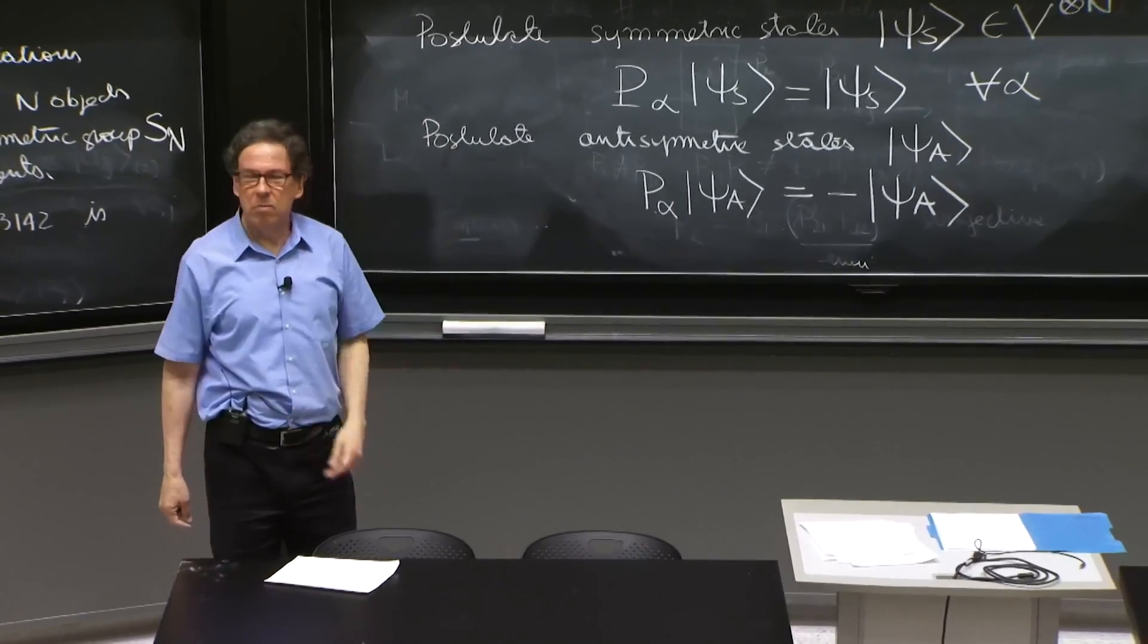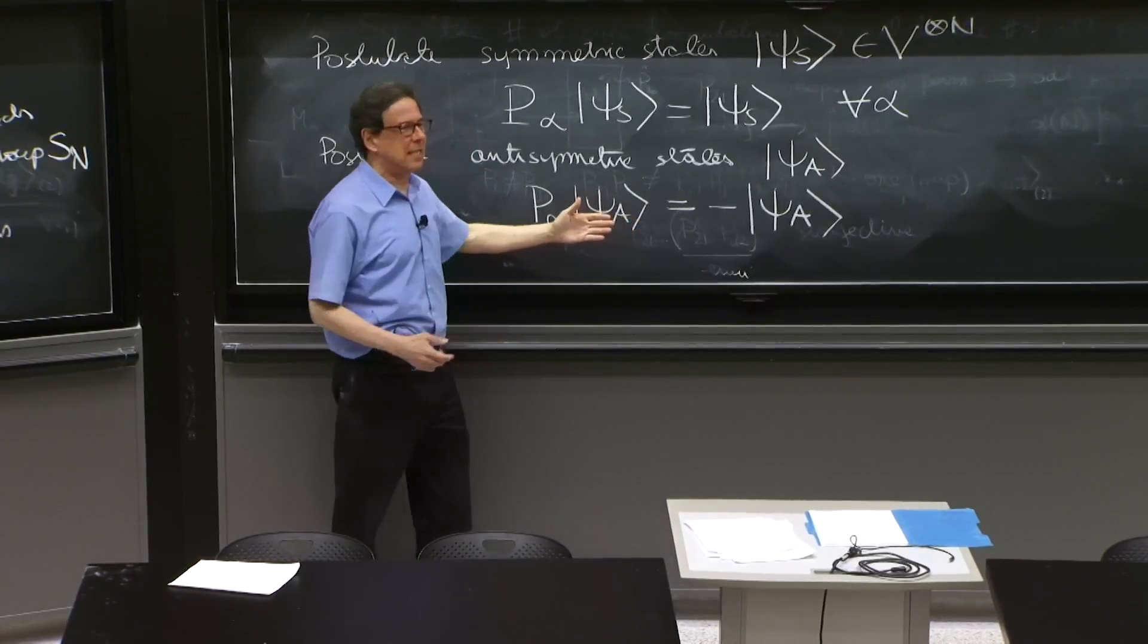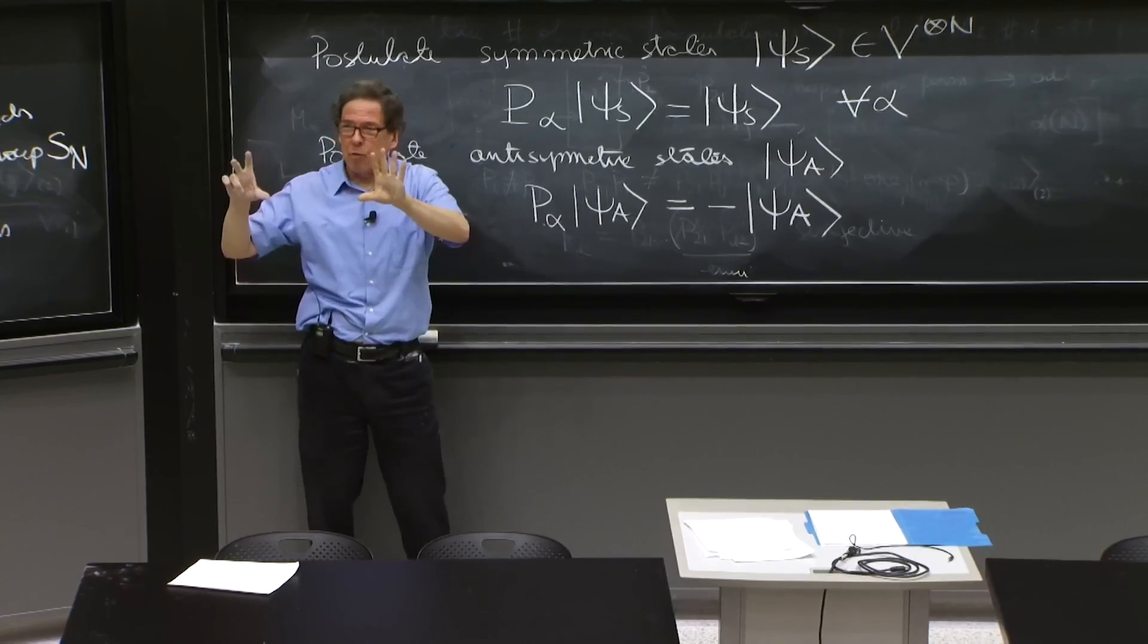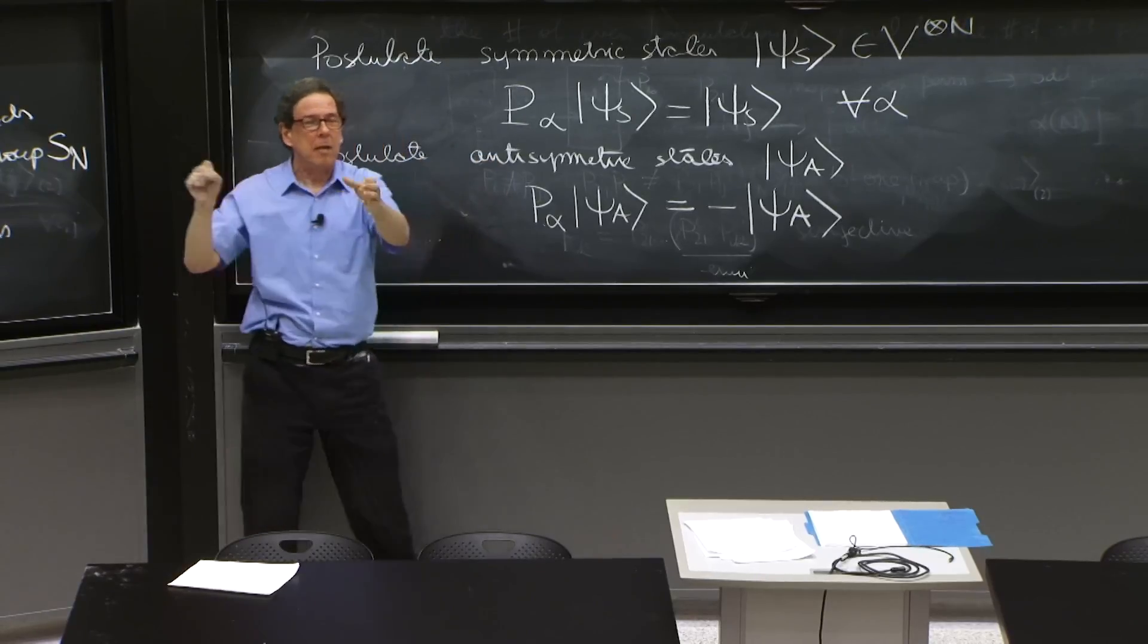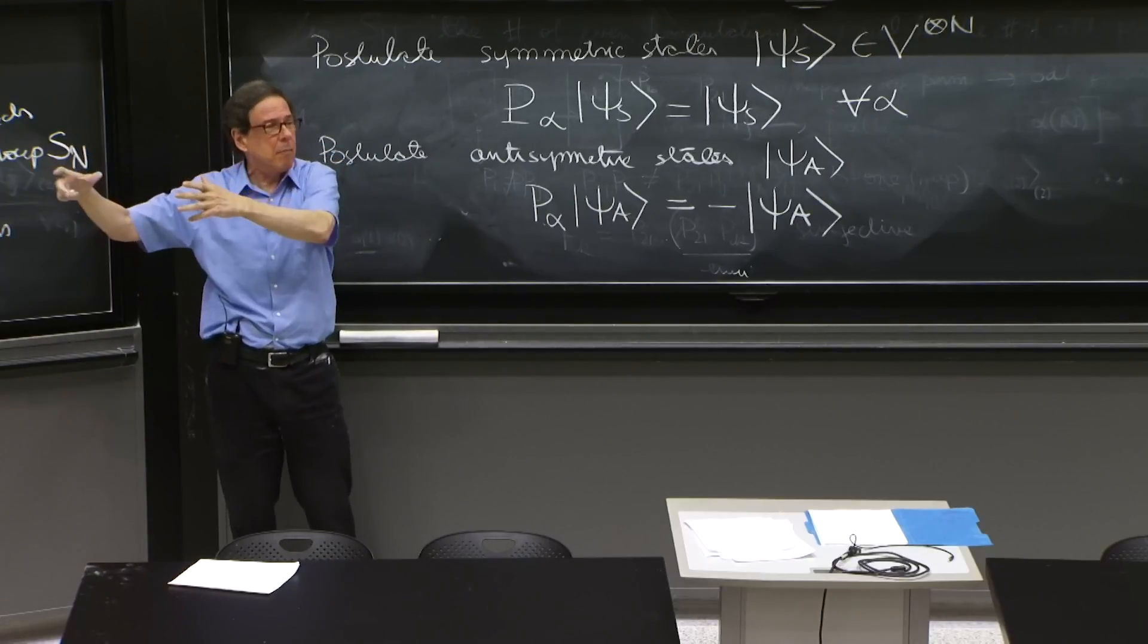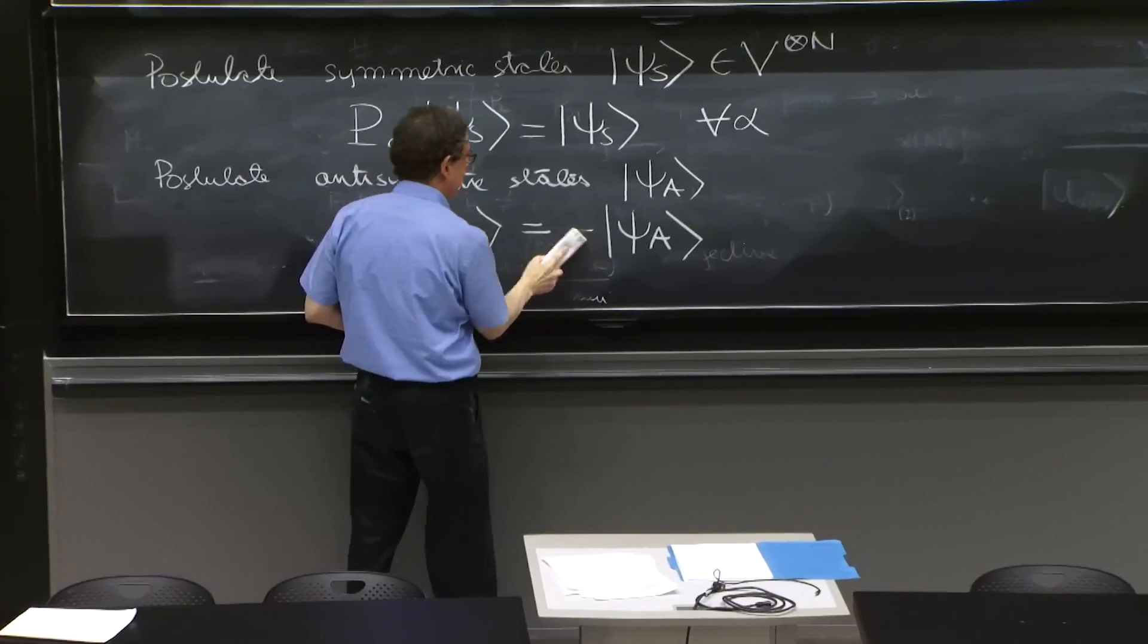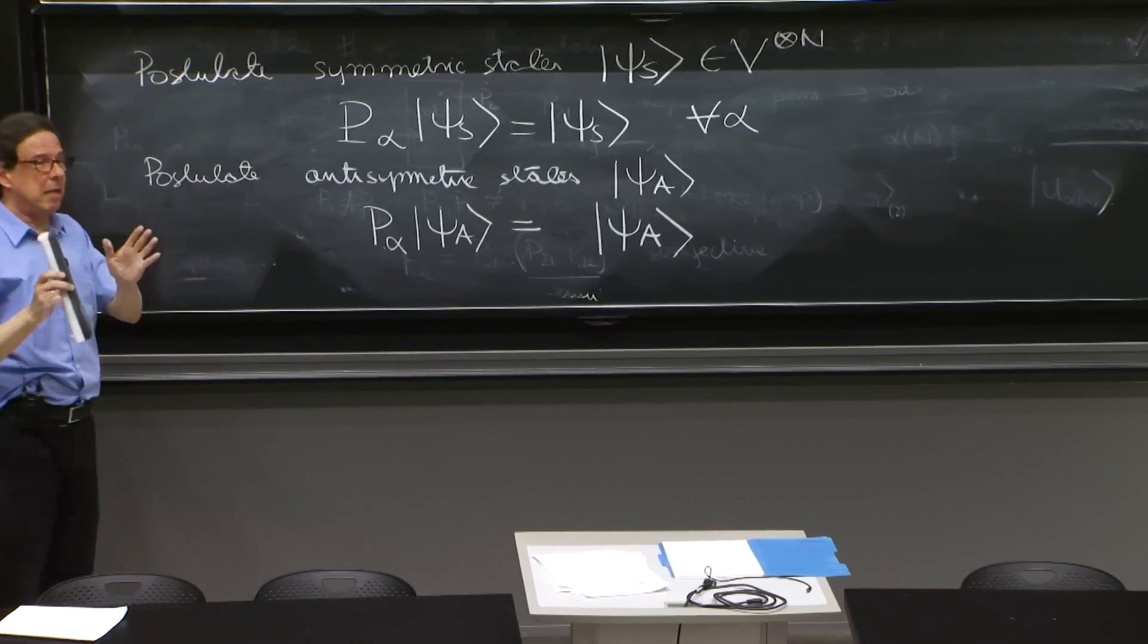So suppose you have one transposition and it changes the state. A transposition should produce a minus sign because it's anti-symmetric. But suppose you have now two transpositions. You act on them with two transpositions. One will change its sign, the other will change its sign. Now the total double transposition is a permutation operator that shouldn't change the sign of the state. So in fact, this is untenable.